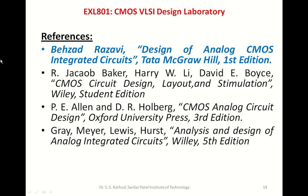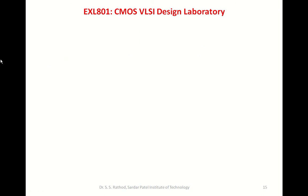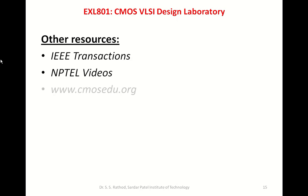References for this course are: Behzad Razavi's Design of Analog CMOS Integrated Circuits, which is the primary reference. For experimentation, you can use CMOS Circuit Design, Layout and Simulation by Jacob Baker. For the operational amplifier part, you can use CMOS Analog Circuit Design by Allen and Holberg. To supplement these books, you can also use Analysis and Design of Analog Integrated Circuits by Gray, Mayer, Lewis, and Hurst. Other resources like IEEE transactions, NPTEL videos, and CMOSedu.org can also be used with this course.